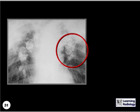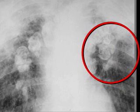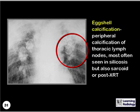What is the name given to the appearance of these lymph nodes? This is eggshell calcification, peripheral calcification of thoracic lymph nodes, most often seen in silicosis, but also sarcoid, and occasionally post-X-ray therapy.